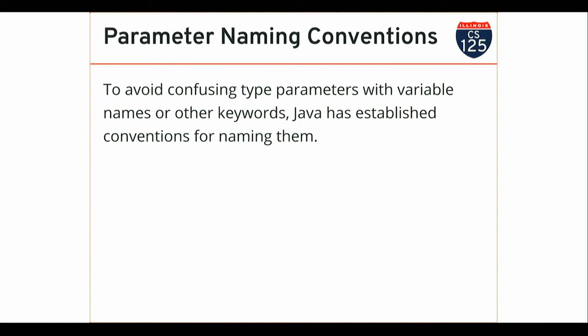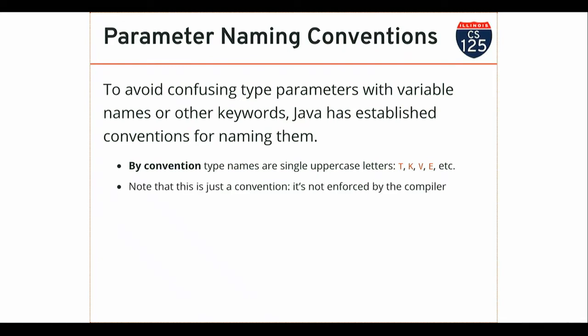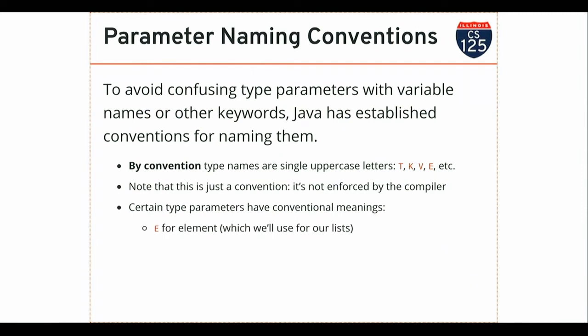There are naming conventions for type parameters that you'll see in Java documentation. By convention, type names are single uppercase letters. You see T, K, V, E, et cetera — these aren't rules, but this is what you'll see in the documentation. Certain type parameters have certain meanings: E is for an element, used in lists, sets, and collections of items. K and V are for keys and values, used in maps. N is for a number.